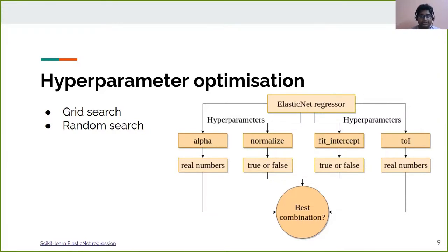In the example flowchart, we can see one elastic net regressor algorithm which has four different hyperparameters: alpha, normalize, fit intercept, and TOL. A couple of these hyperparameters take only real numbers, and two others are boolean — they can take only true or false. We cannot set arbitrary values to these hyperparameters because they are directly linked to the performance of the algorithm. There are two techniques to find the ideal combination: grid search and random search.